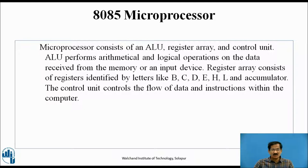A register array consists of registers identified by letters B, C, D, E, H, L, and the accumulator. The control unit controls the flow of data and instructions within the computer. So, a microprocessor consists of an arithmetic logic unit, a register array, and a control unit.